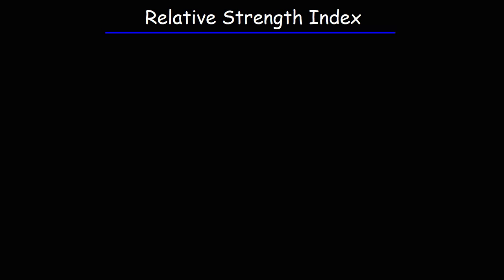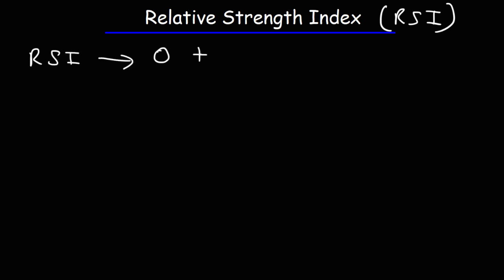In this video, we're going to talk about the Relative Strength Index, abbreviated RSI. The RSI is an indicator that tells you if a stock is overbought or oversold. The RSI is an oscillator that varies between 0 to 100.